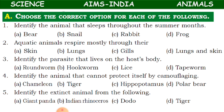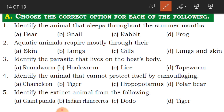Question one: Identify the animal that sleeps throughout the summer months. We have learnt about winter sleep called hibernation and summer sleep called estivation. Which animal sleeps throughout the summer? From the choices - bear, snail, rabbit or frog - the answer is snail. Even frog also sleeps in summer.